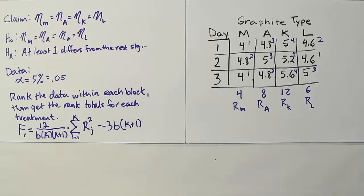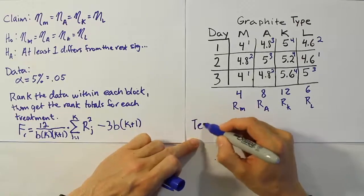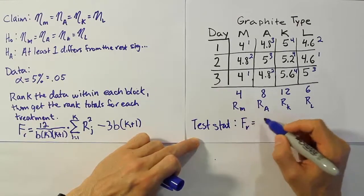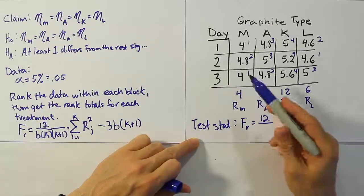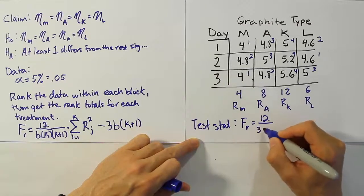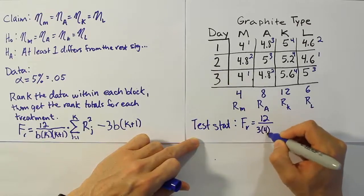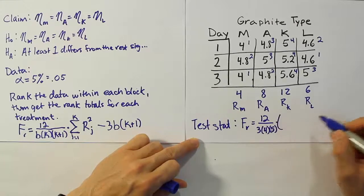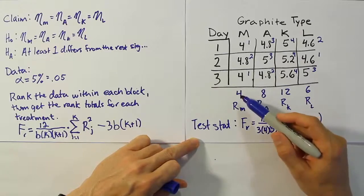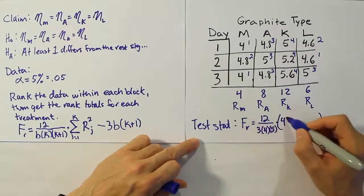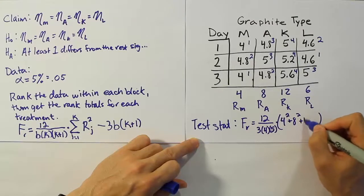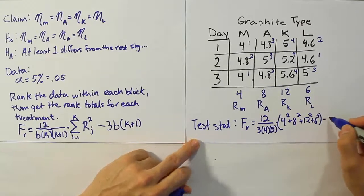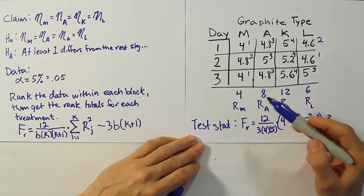All right, so now that we have the formula, let's go ahead and take the numbers that we found here and plug them in so we can end up with our test statistic. So our test stat will eventually become the following. It's going to be FR is equal to twelve over, now the blocks is three, we have three blocks, right? The number of treatments is four, and the number of treatments plus one would be five then. So three, four, five here, times, use a parenthesis for the rest. We're going to have this value squared, so the rank total squared, plus eight squared, plus twelve squared, plus six squared.